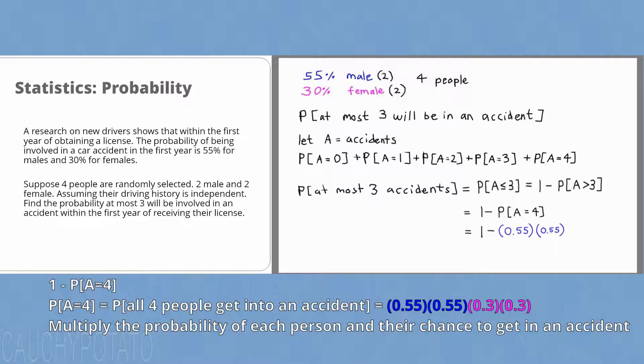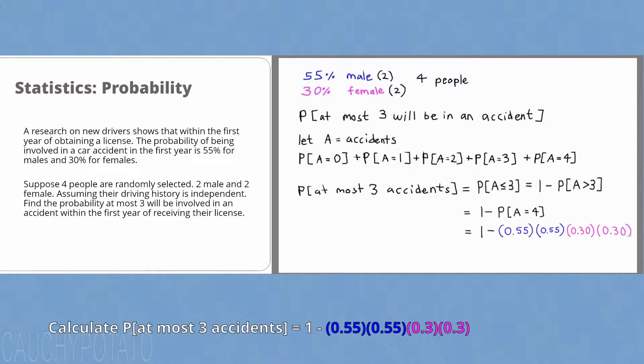times first female gets into an accident, which happens 30% of the time. So 0.30 times the second female gets into an accident, 0.30 as well. Put this all in the calculator and get 0.972775 or 97%.